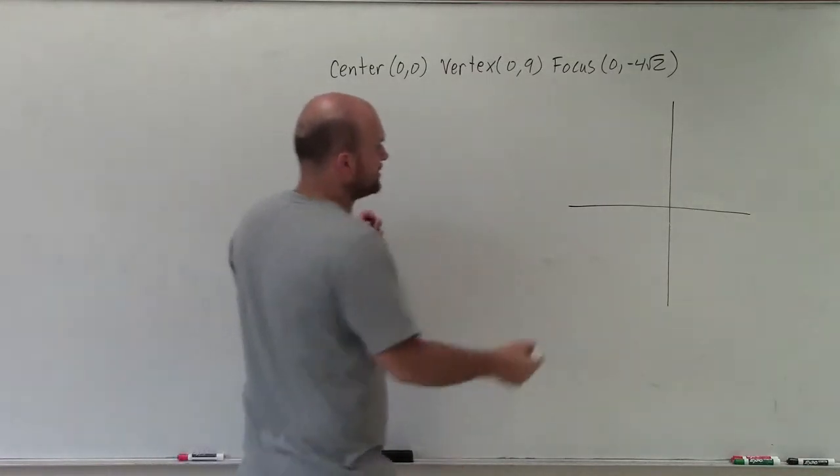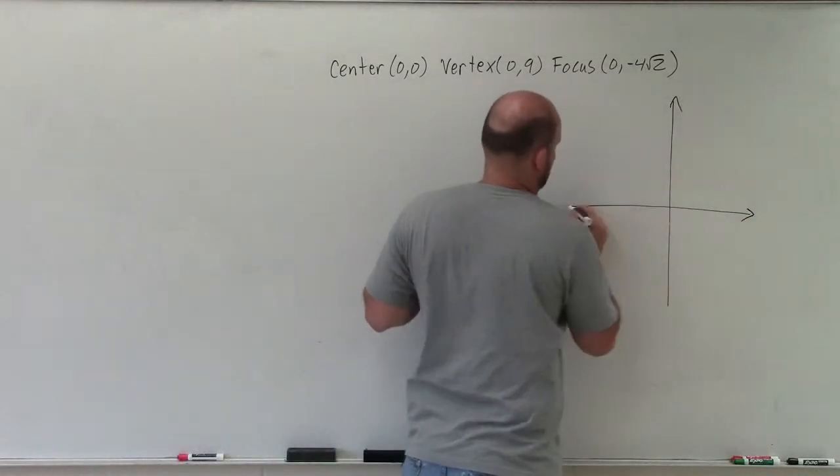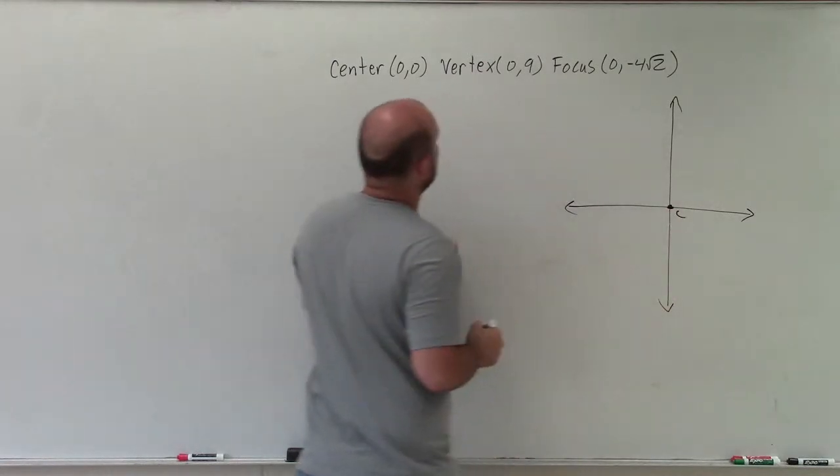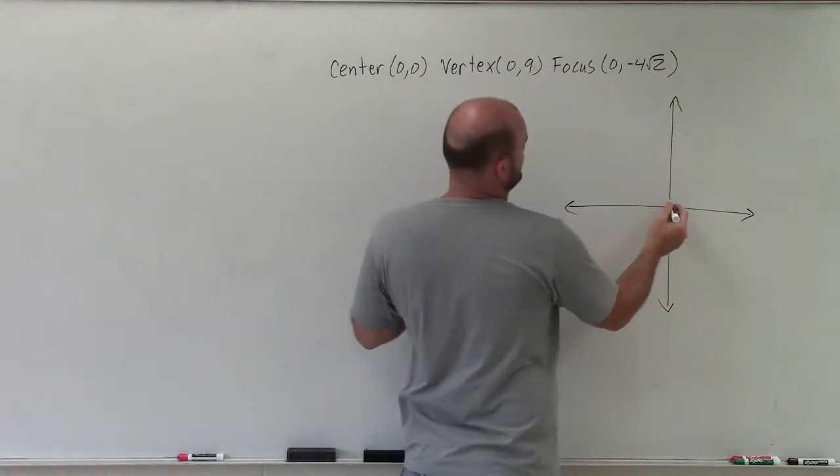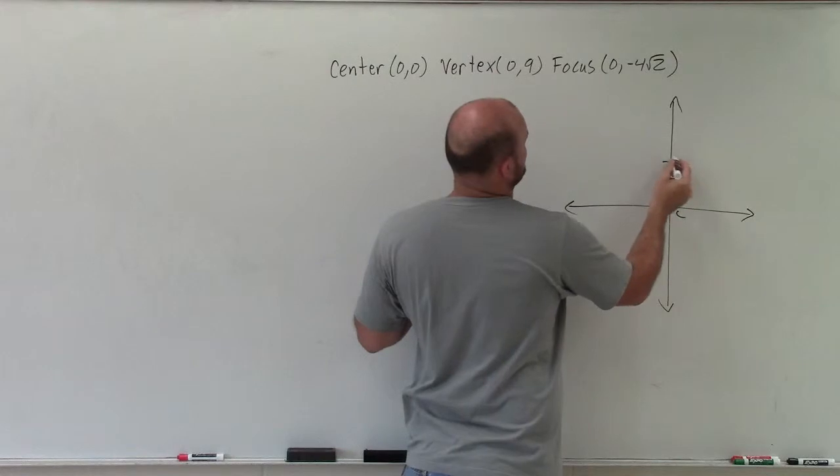So we have the center at (0, 0). That's nice. Then our vertex is at (0, 9). So 0, 1, 2, 3, 4, 5, 6, 7, 8, 9.